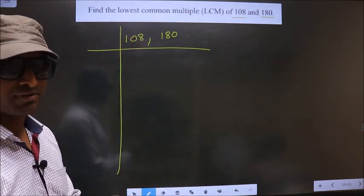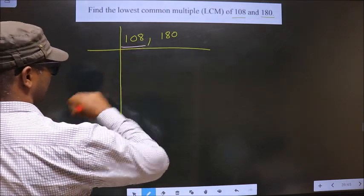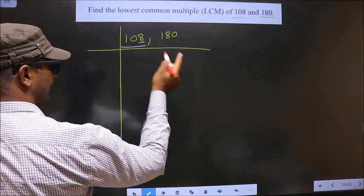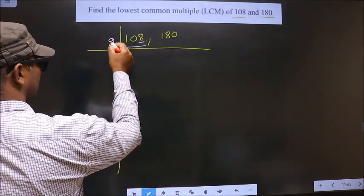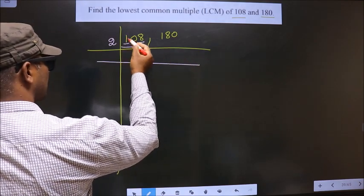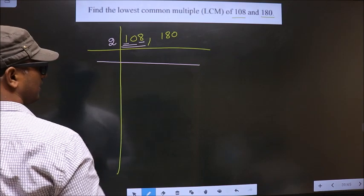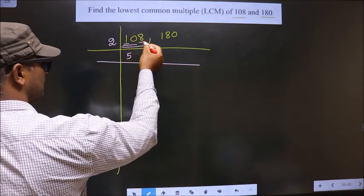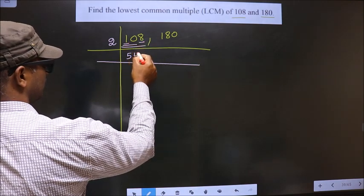Now we should focus on the first number, that is 108. For this number, the last digit is 8, which is even, so we take 2 here. The first digit is 1; since 1 is smaller than 2, we take 2 digits, that is 10. When do we get 10 in the 2 times table? 2 times 5 is 10. The next digit is 8; when do we get 8 in the 2 times table? 2 times 4 is 8.